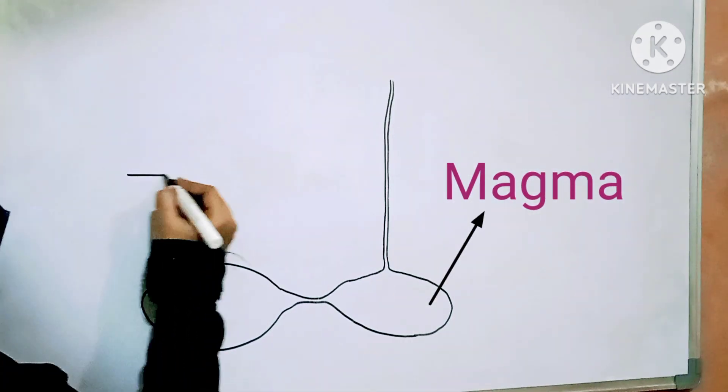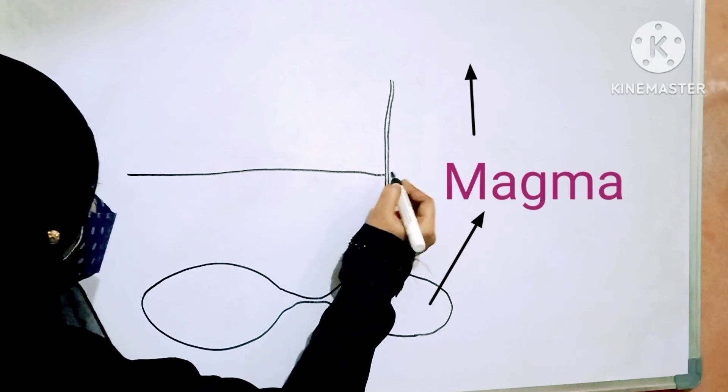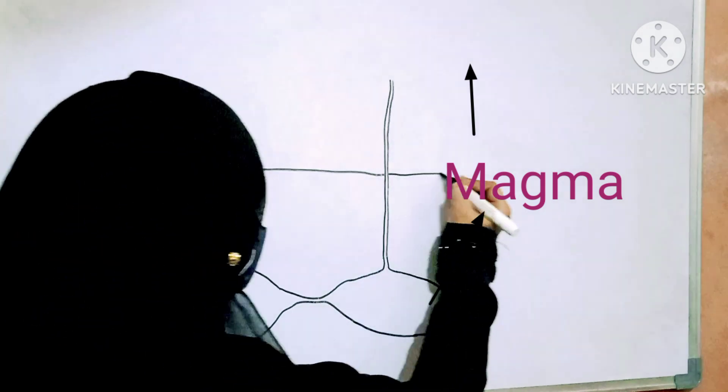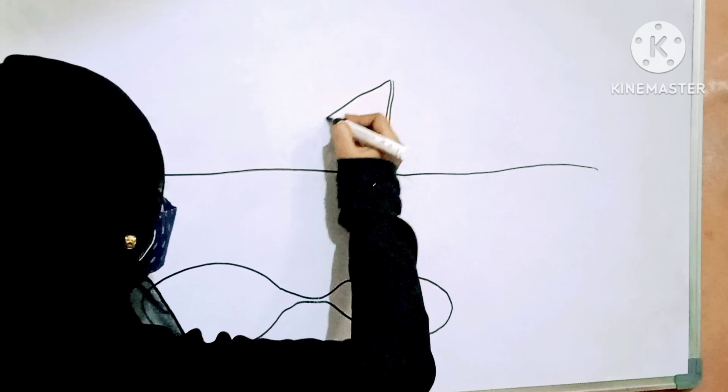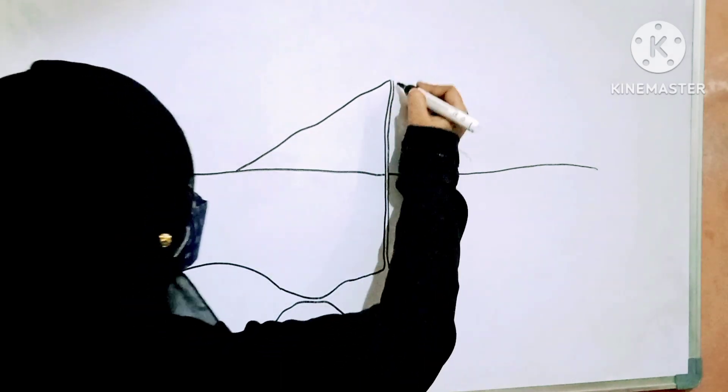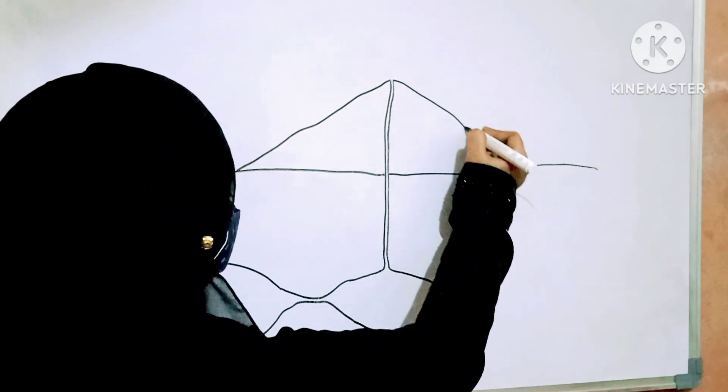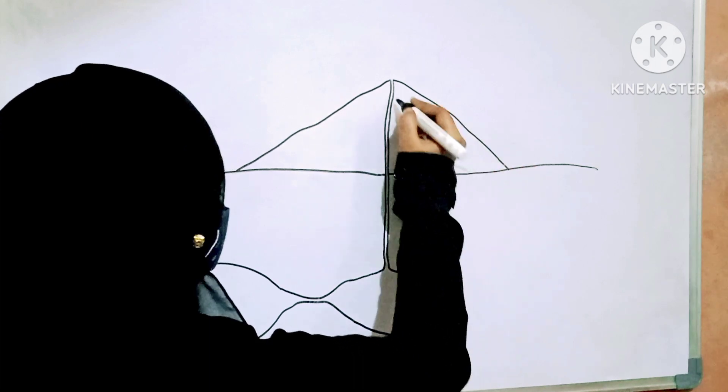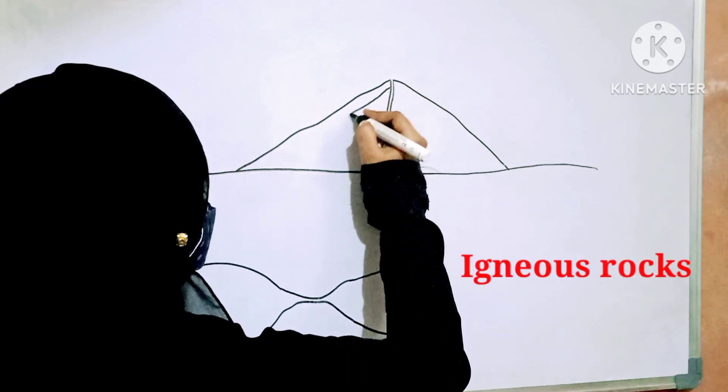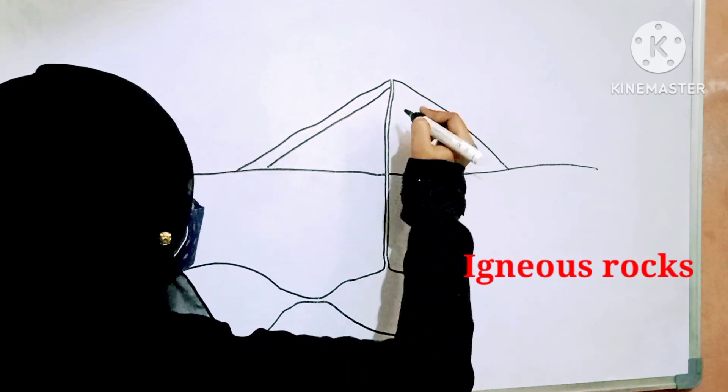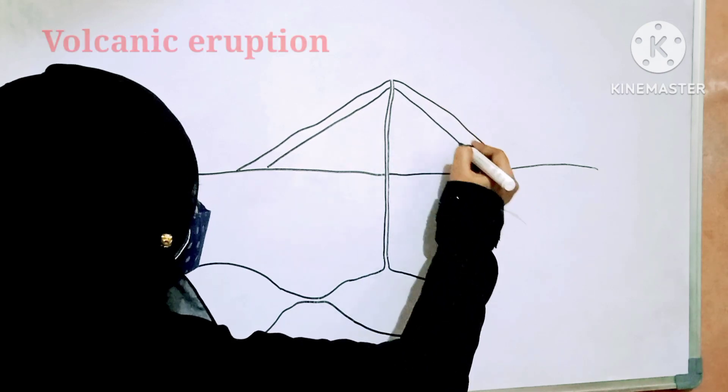This magma is pushed upwards towards the surface of the earth by the pressure inside the earth. When this magma cools just below the surface of the earth and forms a hard rock, this type of rock is called igneous rock.